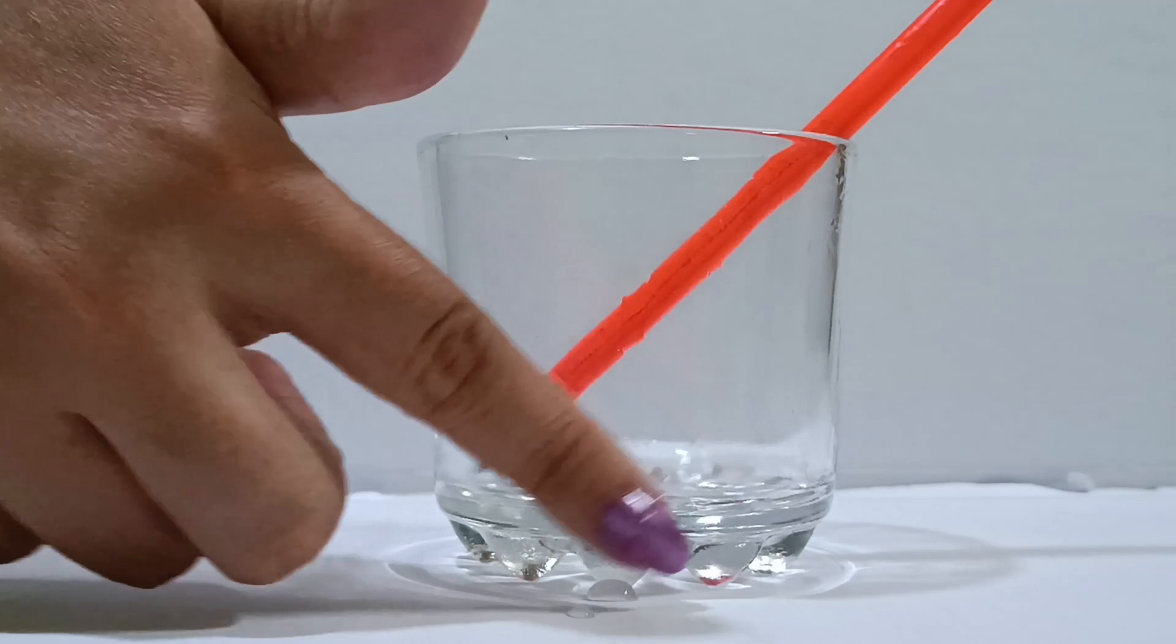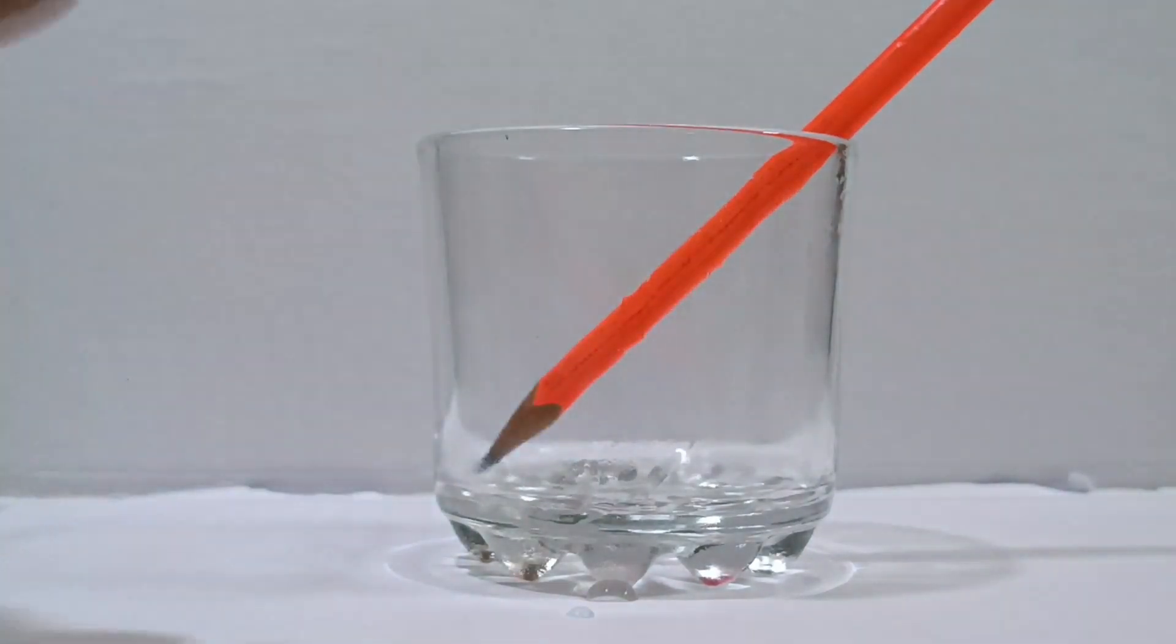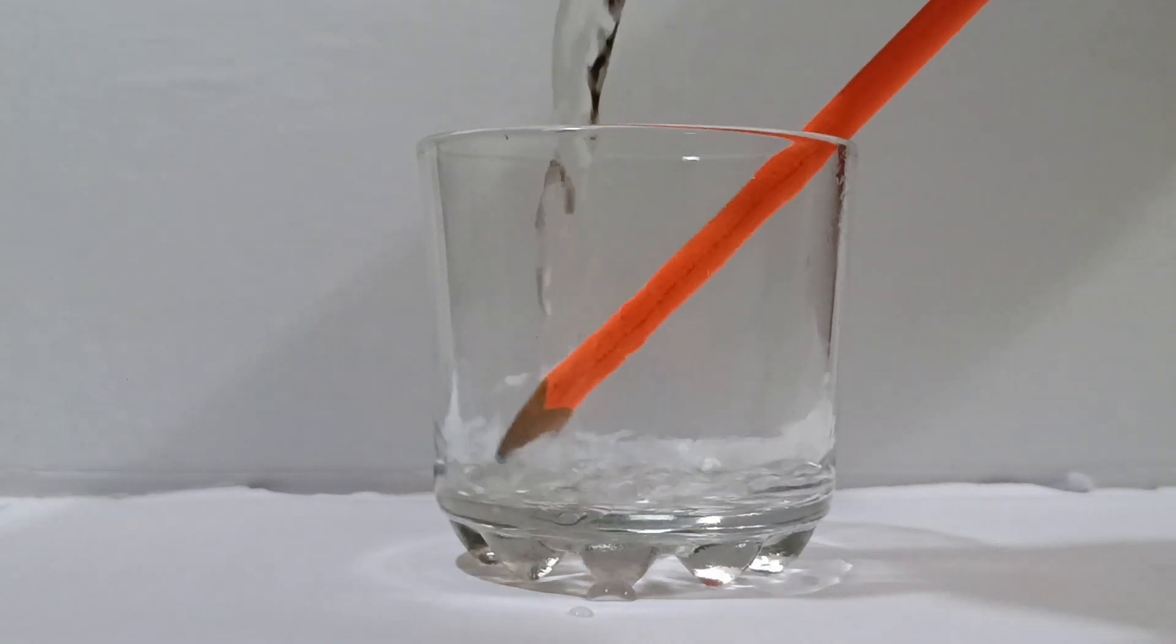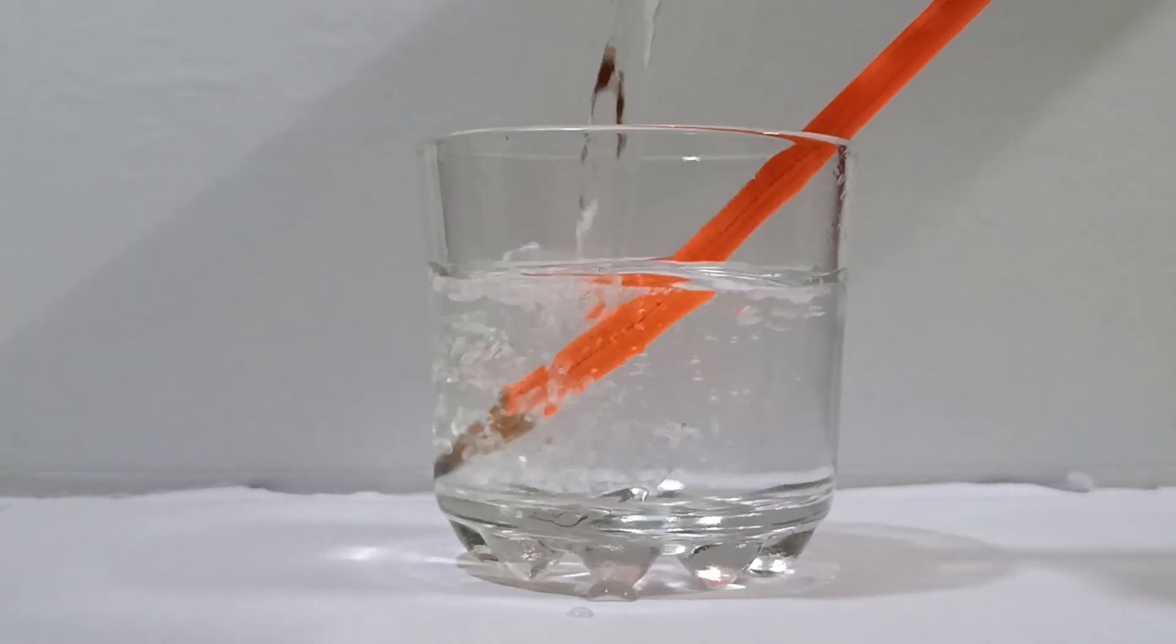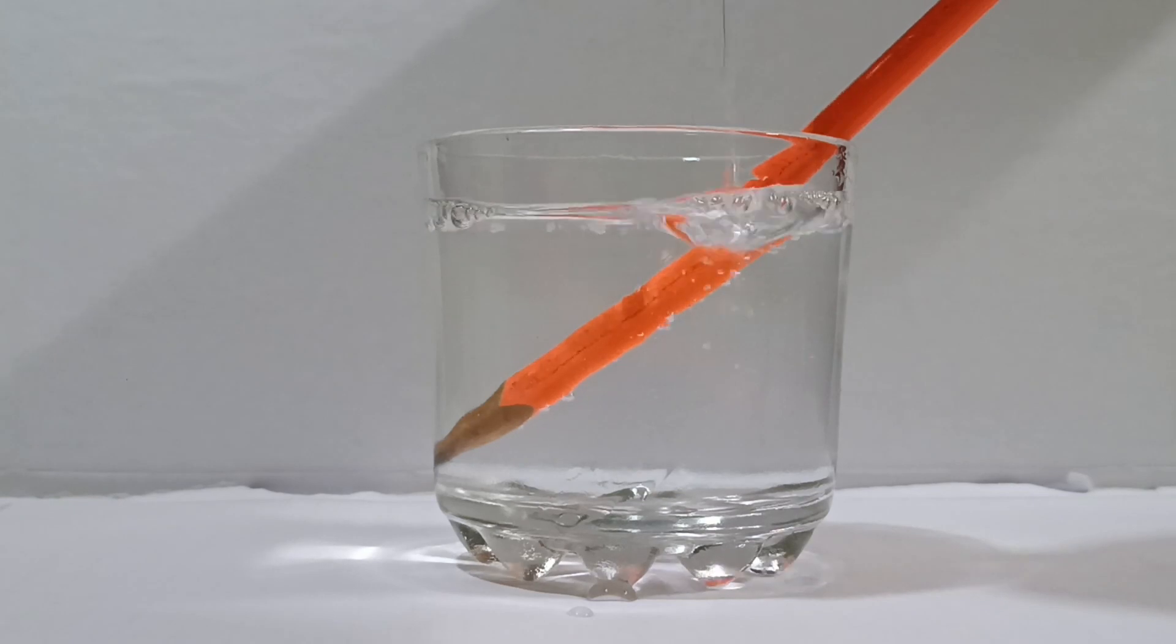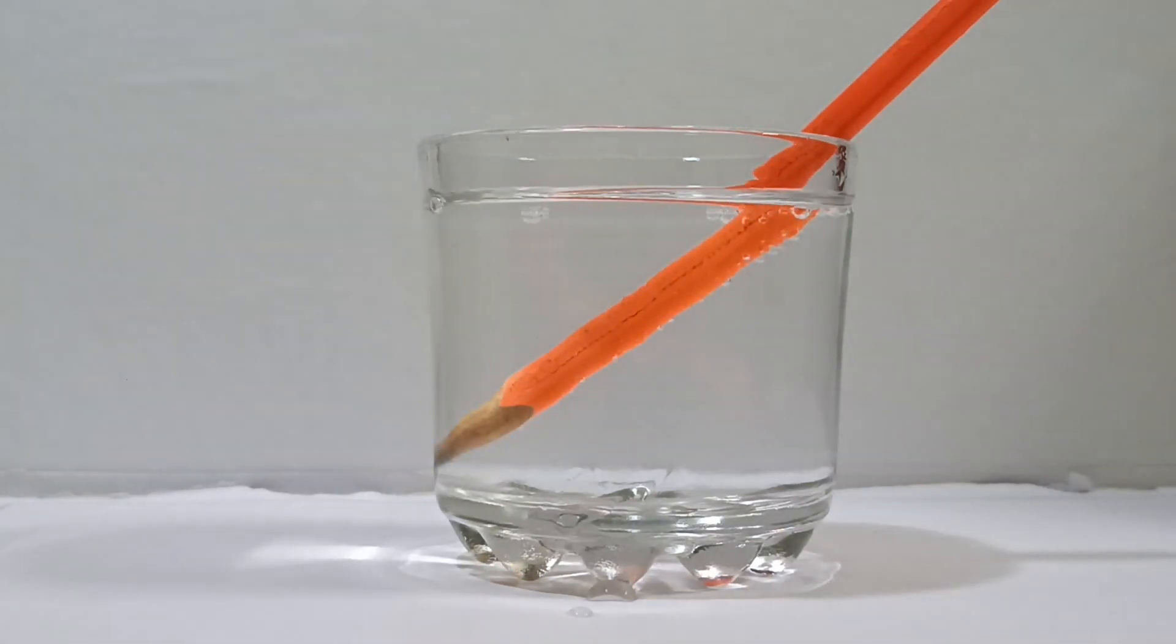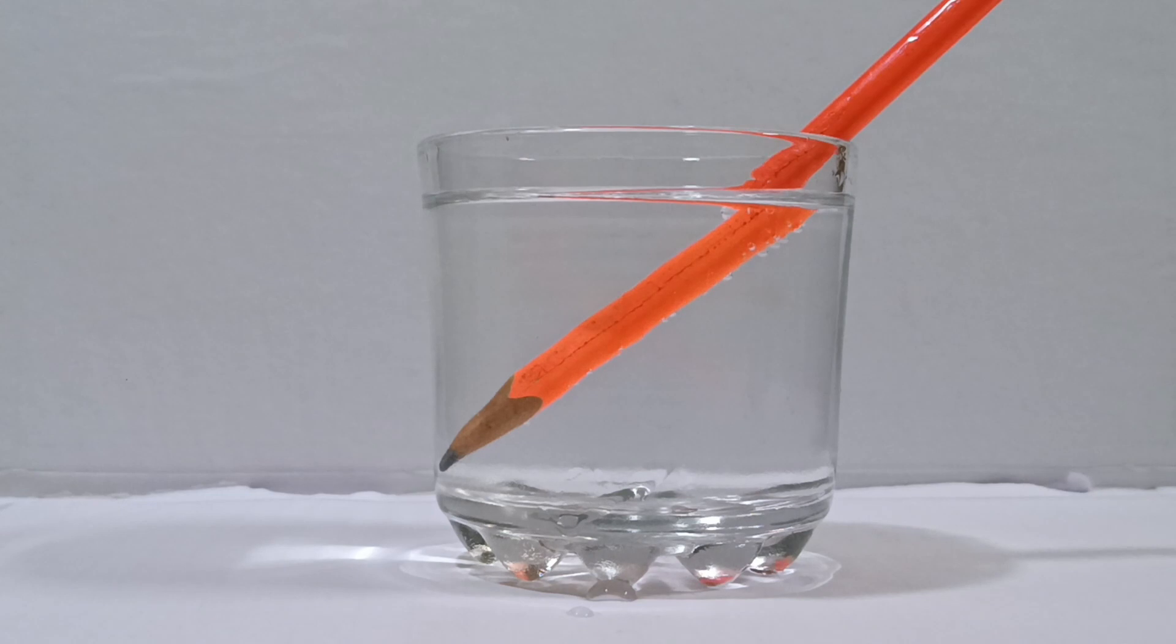And you see that the pencil seems like it is straight. But whenever I am pouring the water inside it, you see what is happening. The pencil seems like it is broken. So this is our observation.